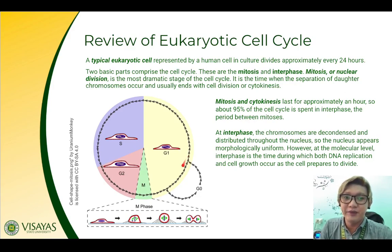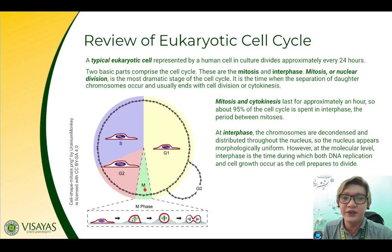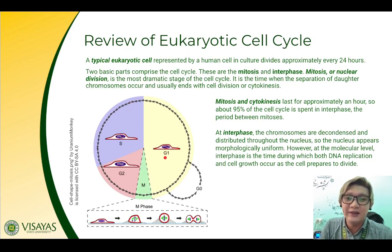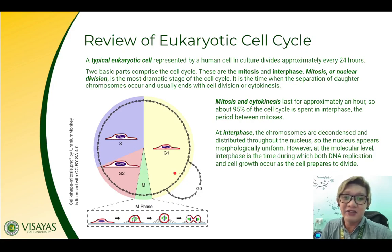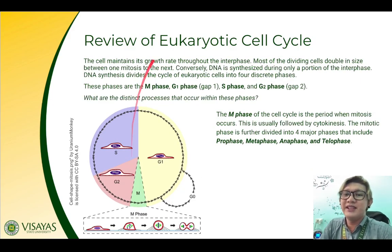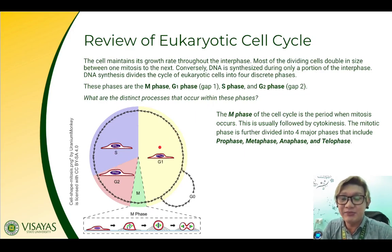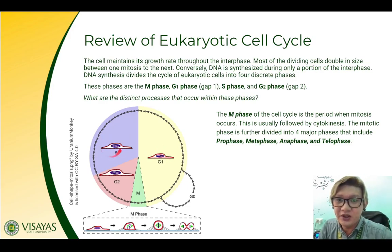About 95 percent of the cell cycle is spent in interphase, because interphase is the period in between mitosis or successive nuclear divisions. At interphase, the chromosomes are decondensed — meaning they are back to their normal state, distributed throughout the nucleus, and the nucleus appears morphologically uniform. However, at the molecular level, interphase is the time when both DNA replication and cell growth occur as the cell prepares to divide. DNA is synthesized during only a portion of the interphase.